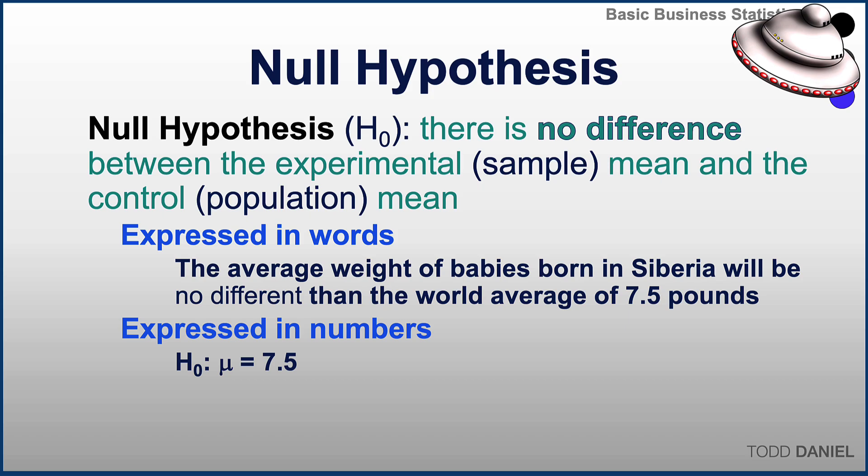Another way in which you will see a null hypothesis written is H sub zero colon mu one equals mu two. When we are comparing two samples, we might say that each sample is drawn from a population whose means are equal — remembering that when two numbers are equal, they are not different.